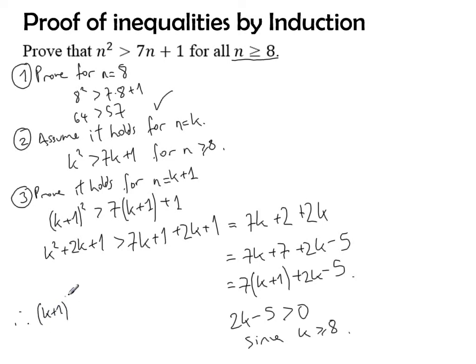Hence, I can conclude that (k+1)² is bigger than 7 times (k+1) plus 1, because I already know it's bigger than something that's bigger than that, which is 7 times (k+1) plus 2k minus 5.